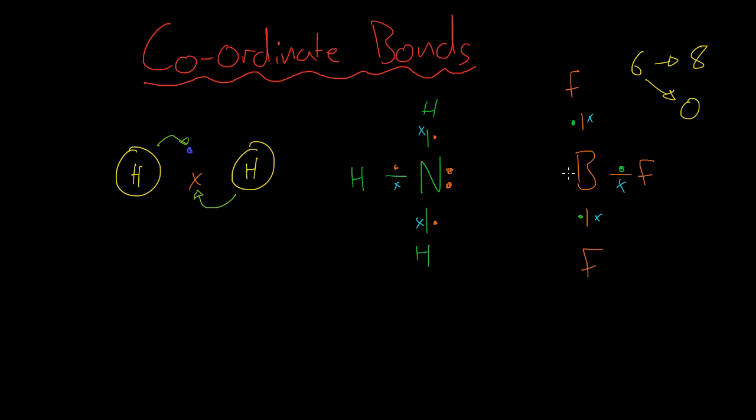In order to become stable, this needs to accept 2 electrons here, and that's exactly what we have on this nitrogen. If this pair of electrons goes to this boron, then we end up with a new molecule.